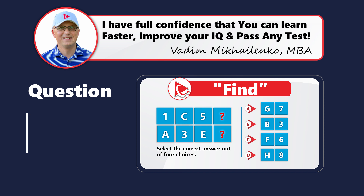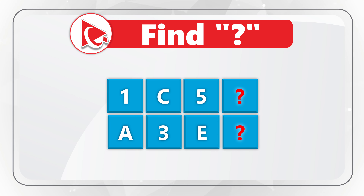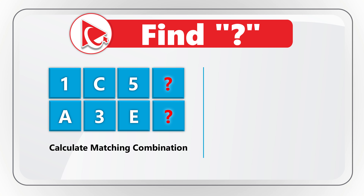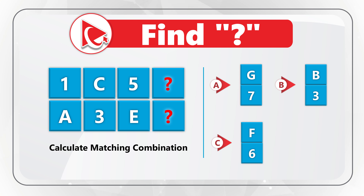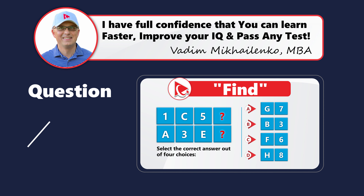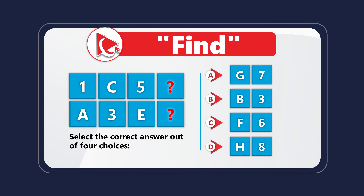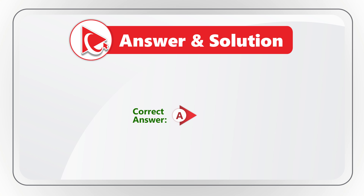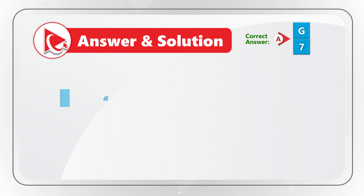Calculating missing items is one of my favorite questions, especially considering that the calculations are very simple. You're presented with two rows of values. The first row contains values 1, C, 5, and then a missing value. The second row contains values A, 3, E, and then a missing value. You need to select the calculated combination out of four choices: choice A is G7, choice B is B3, choice C is F6, and choice D is H8. Consider pausing the video to better understand the question. I believe the correct answer is choice A, G7.